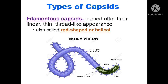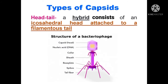Filamentous capsids are named after their linear, thin, thread-like appearance and are also called rod-shaped or helical capsids. Another type is the head-tail capsid, a hybrid type consisting of an icosahedral head attached to a filamentous tail. One example of a head-tail capsid is the bacteriophage.